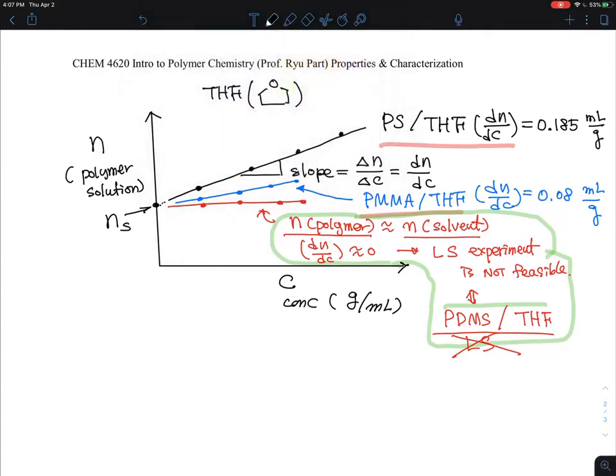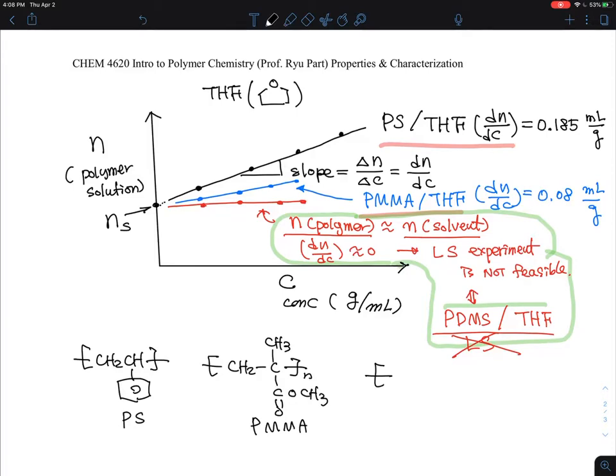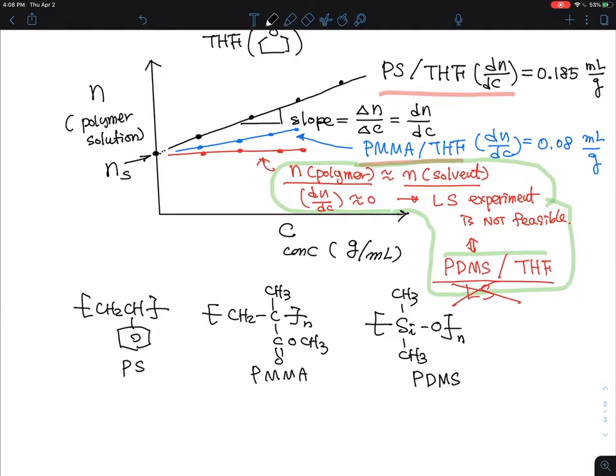Just for your reference, I think for the last time, I'm going to write these chemical structures. Polystyrene, it's like polystyrene with this benzene group. That's polystyrene. And the PMMA is polymethyl methacrylate, and they are made by radical polymerization. This is methyl methacrylate, so that's why this is PMMA. And polydimethylsiloxane is silicon-oxygen. This is a siloxane backbone with dimethyl. This is what people usually call silicon polymer, PDMS.